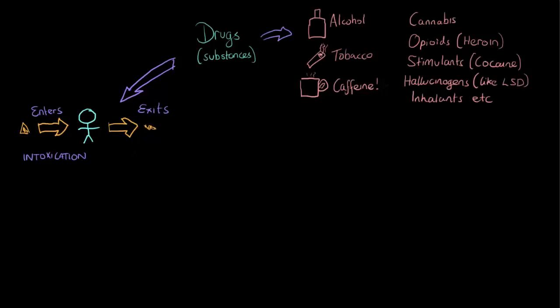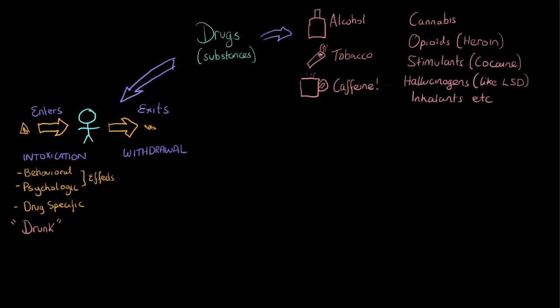If a drug exits after a period of prolonged use, we may experience something called withdrawal. Intoxication refers to both the behavioral and psychological effects of the drug on the person, and these can be very much drug-specific. For example, when we're drunk, that's intoxication with alcohol. When we describe somebody as being high, that's a colloquial way of describing intoxication with another substance, such as cocaine or heroin.